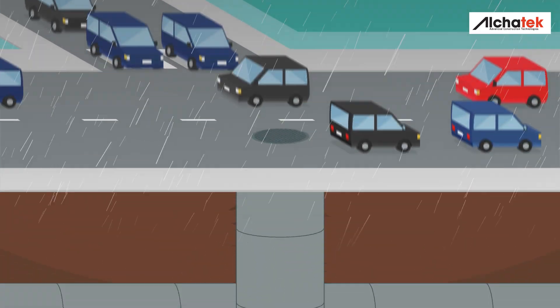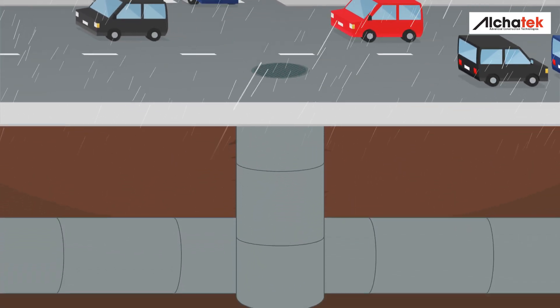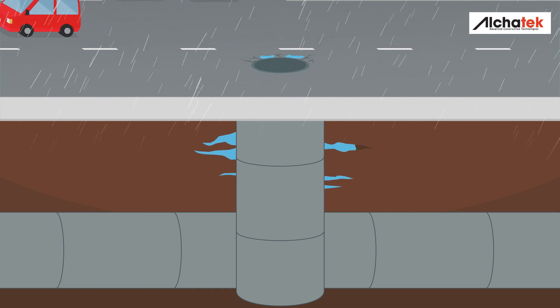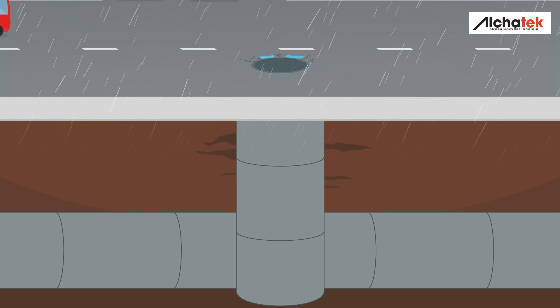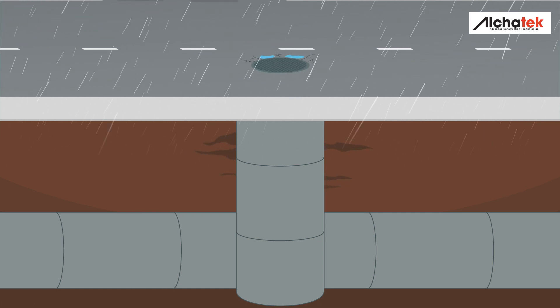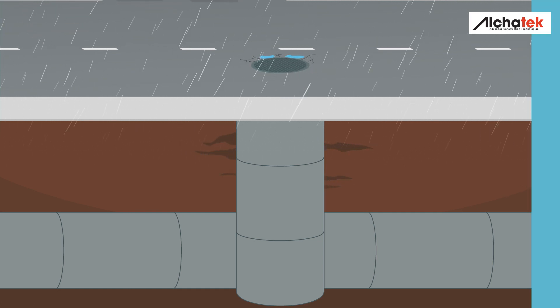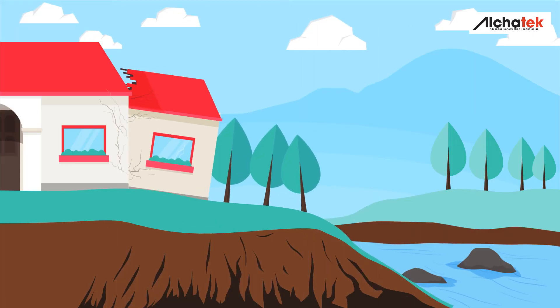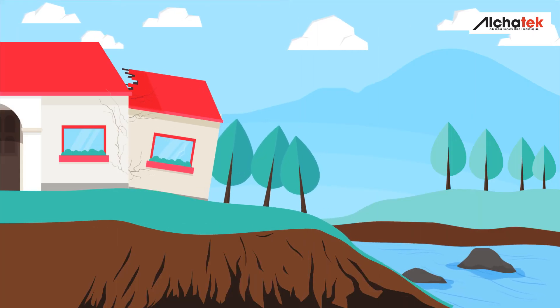Eroding soil can create sinkholes under roads and damage existing infrastructure. In some cases, this erosion is caused by water leaking into pipes and manholes and carrying soil with it. Regardless of the cause, loose soil will result in structural damage over time.